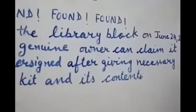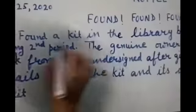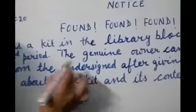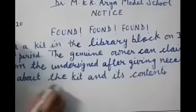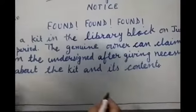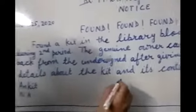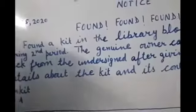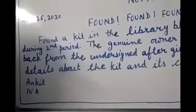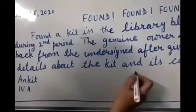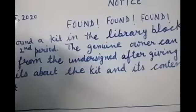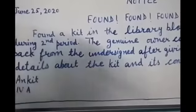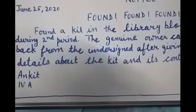The genuine owner can claim it back from the undersigned — 'undersigned' means the person who has written their name at the bottom — after giving necessary details about the kit and its contents. The person who comes to claim the kit must provide details about it. You should not give details about the item in the notice; rather, ask the claimant to provide those details, so you can identify the genuine owner.